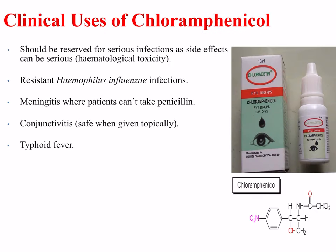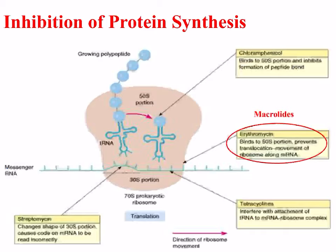Clinical use of chloramphenicol should be reserved for serious infections, as the hematological toxicity can be serious. It is used for resistant Haemophilus influenzae infections, in meningitis where patients cannot take penicillin, in conjunctivitis as it is safe when given topically, and in cases of typhoid fever.